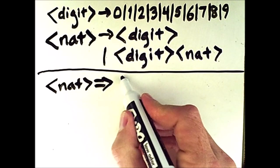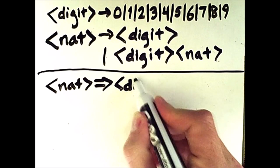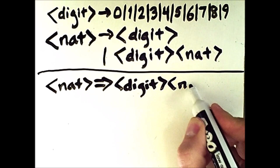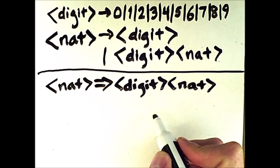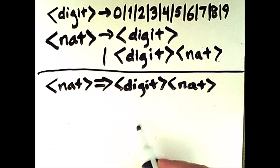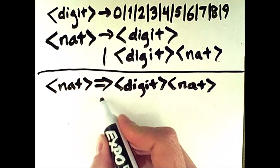Now, I can pick whatever rules I want, but I will choose ones leading to a result which I think is illustrative. So there's two cases for NAT, either digit or digit NAT. I pick the second one, and so that's one expansion.